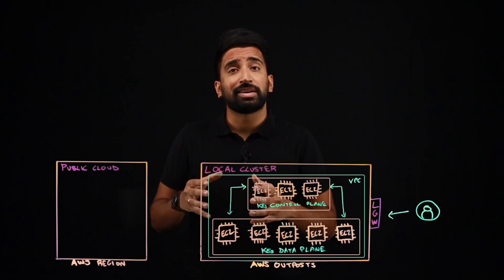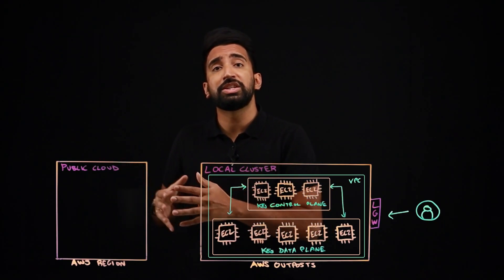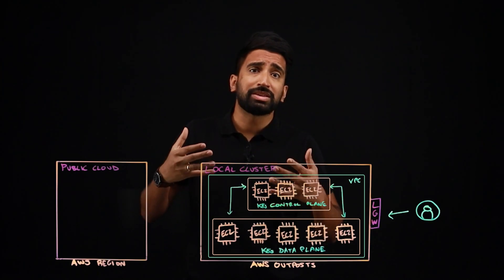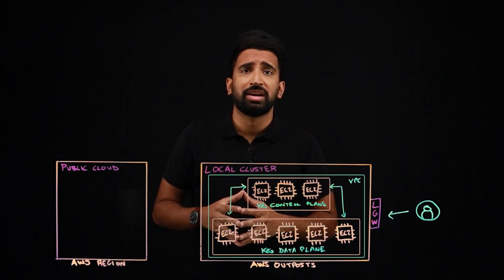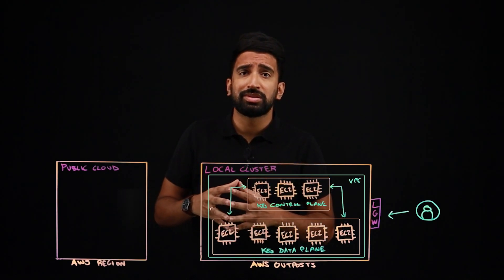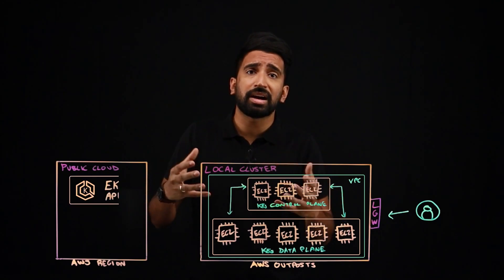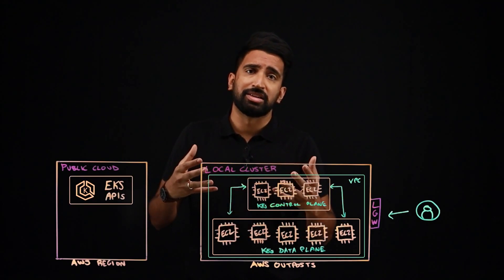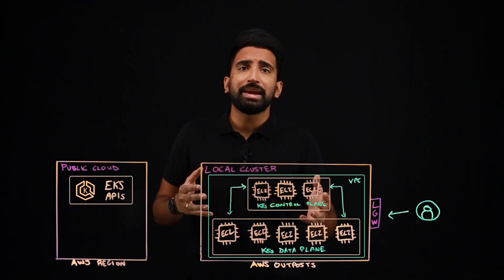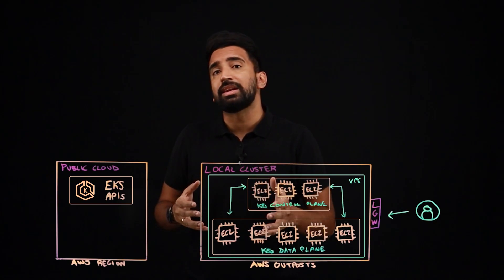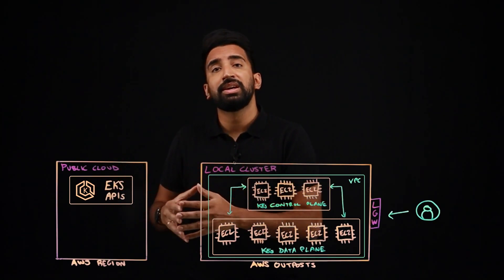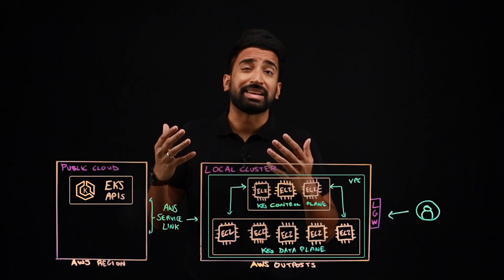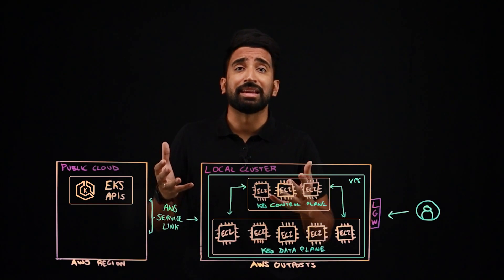However, when connected to an AWS region, you benefit from AWS managing that Kubernetes cluster. This includes things like using the EKS APIs and the console to manage your cluster. To communicate back to the AWS region, a service link is used, which is essentially an encrypted VPN connection.